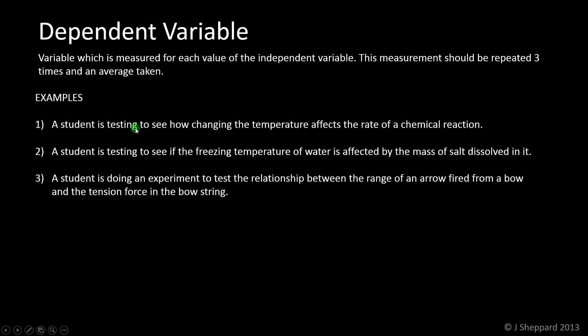Example one: a student is testing to see how changing the temperature affects the rate of a chemical reaction. We're going to think about which one we're unable to control ourselves and therefore is going to be our dependent variable. It's going to be the rate of the chemical reaction. We're measuring how the temperature affects this.